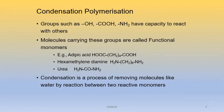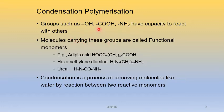First, we discuss about condensation polymerization. Groups such as OH, COOH, NH2 — that is hydroxyl group, carboxylic acid group, and amine group — have the capacity to react with others. Molecules carrying these groups are called functional monomers.